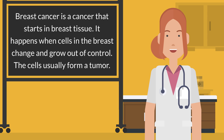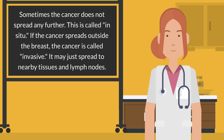Breast cancer is a cancer that starts in breast tissue. It happens when cells in the breast change and grow out of control. The cells usually form a tumor. Sometimes the cancer does not spread any further — this is called in situ. If the cancer spreads outside the breast, the cancer is called invasive.